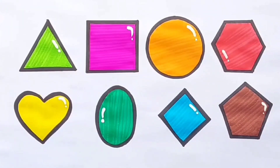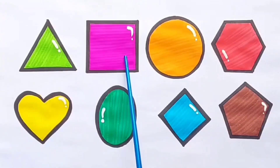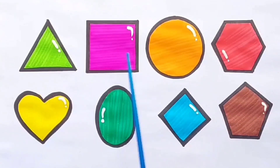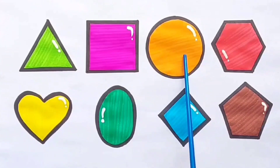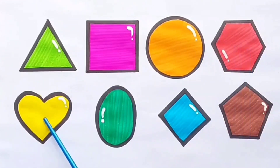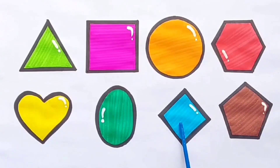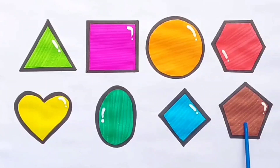Let's revise: triangle, square, circle, hexagon, heart, oval, diamond, pentagon.